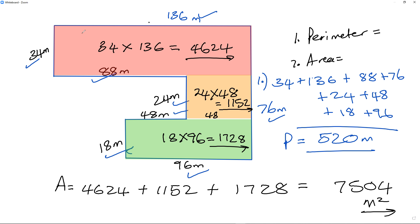Alright, so that's 34 times 136, double check that. 24 times 48, that's right. 18 times 96, that's right as well. So 18 times 96, 1728. Double check my answers for me, and let me know if you have any questions there.